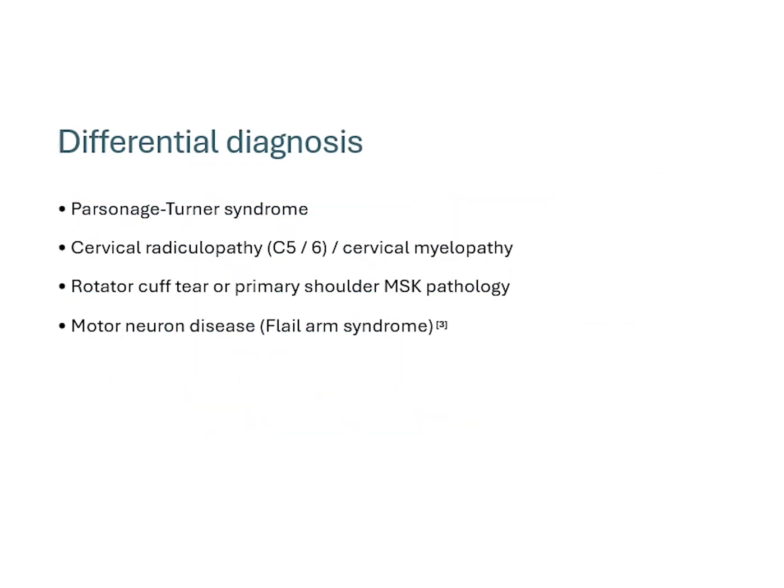The differential at this point — this patient has quite a textbook presentation for Parsonage-Turner syndrome, so that's at the top of my differential. Also strongly considering a cervical radiculopathy, probably C5 to C6 region, and one could consider a more central pathology including cervical myelopathy, though the unilateral nature makes that less likely. One could consider rotator cuff tears given his early pain and provocative maneuvers, though that wouldn't explain the atrophy. One could certainly consider motor neuron disease; flail arm variant of ALS can present in a similar fashion.